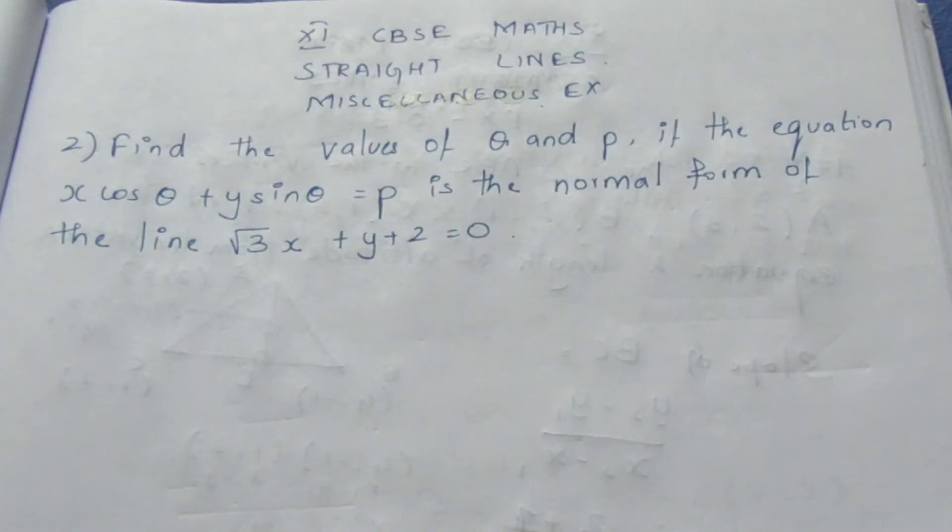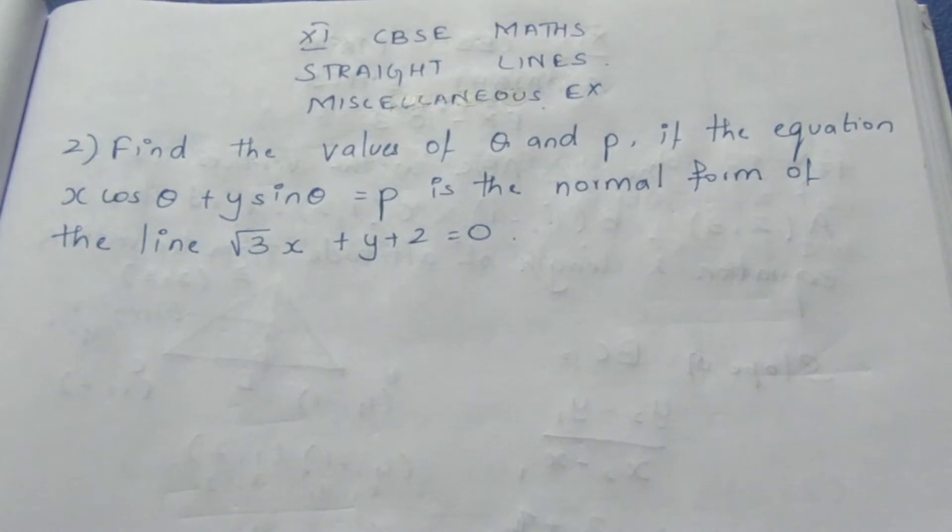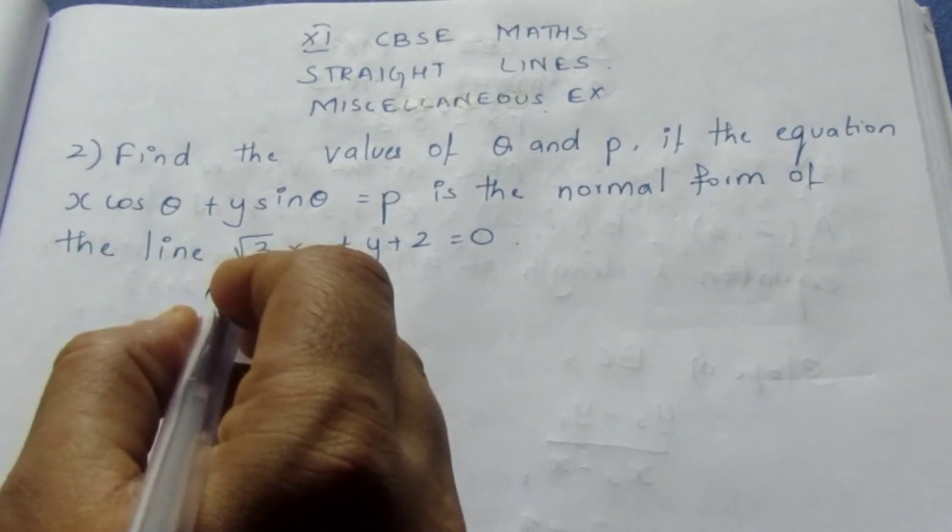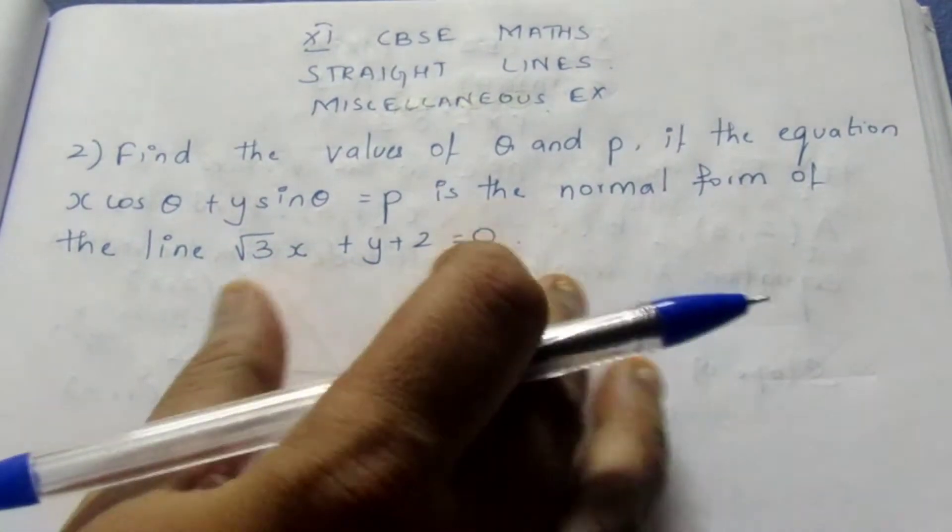Find the value of theta and p if the equation x cos theta plus y sin theta equal to p is the normal form of the line root 3x plus y plus 2 equal to 0.